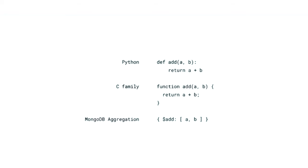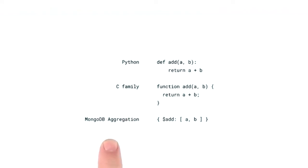Now that we've got the basics of project, it's time we discuss aggregation expressions more thoroughly. Expressions are the core units of the aggregation framework. If an aggregation pipeline is a conveyor belt that we can place different stages upon to build our desired result, expressions are the tools in each stage that actually perform these transformations. Expressions are the functions of the aggregation framework — just like functions, they take an argument and return a result. Here we have identical add functions in Python, the C family of languages, and the MongoDB aggregation framework, and executing any of them would produce identical results.